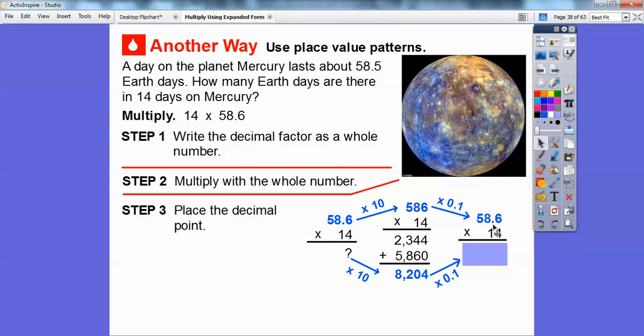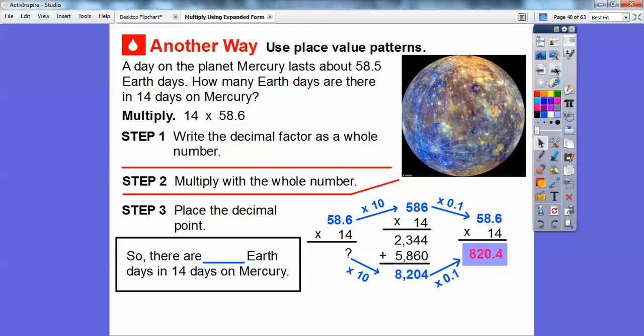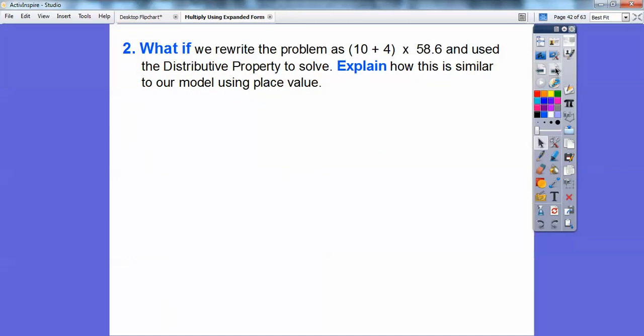So we're going to go ahead and multiply it times 0.1 now. And all that's going to do is move the decimal back to where we started, 58.6. So we're just going to take this answer right here by multiplying it by 0.1. That just moves that decimal over right there. So we get 820.4. Let's not forget to answer the question. So there are 820.4 Earth days in 14 days on Mercury.